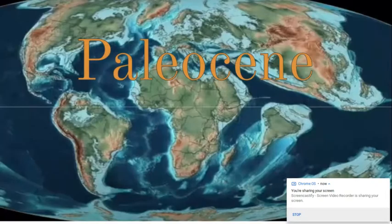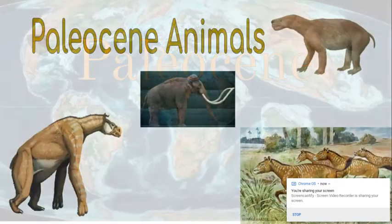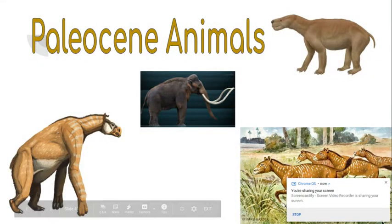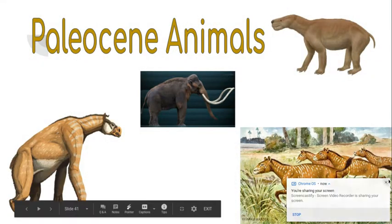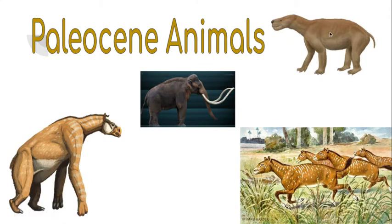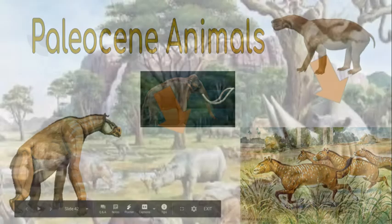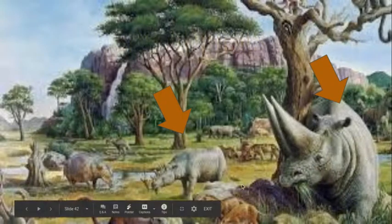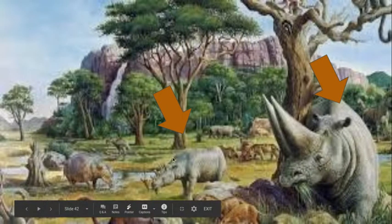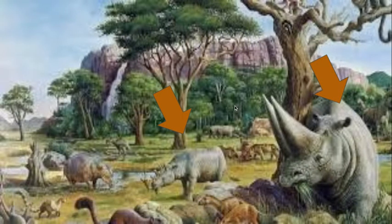First is the Paleocene. Here are some animals, including some weird horse-like creatures and zebra, some weird tapir animals, and the first mammoths. Here is an ecosystem with rhinos and some trees that you see in Africa, but actually this took place in North America.